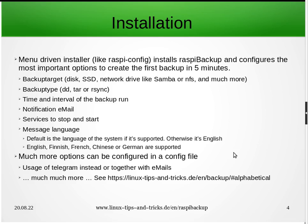You can also define a notification email to receive backup run messages, and configure which services to stop and start. Supported message languages are English, Finnish, French, Chinese, and German. If you install RaspiBackup on a different system, the default is English. There are many more options that cannot be configured by the installer but can be enabled by editing the config file directly.